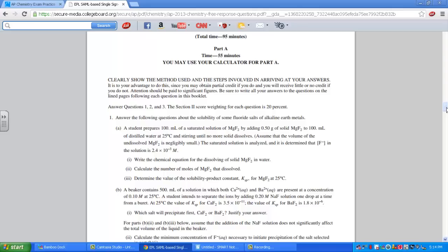Question 1: We're being asked to answer questions related to the solubility of fluoride salts of alkaline earth metals, group 2A. A student prepares 100 mL of a saturated solution of magnesium fluoride by adding 0.5 grams of the solid to 100 mL of distilled water, stirring until no more solid dissolves. Assuming that the volume of the undissolved MgF2 is negligibly small, we determine that the fluoride ion is 2.4 times 10 to the negative third molar units.